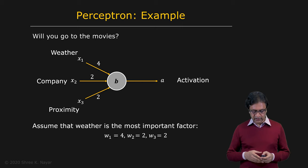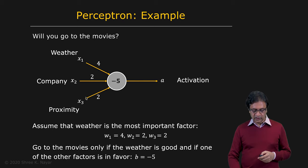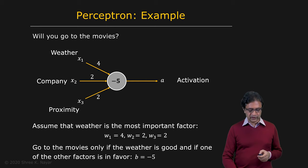We need a little bit more information to decide what the weights and biases need to be in this case. Let's assume for a moment that the weather is the most important factor. That is, if the weather is bad, you're not going to the movies. So you can assign a relatively large weight for the weather and lower weights for the other two, company and proximity. So four to two, for instance. And let's say that what you would like is to end up going to the movies only if the weather is good and at least one of the other two factors is also true or in favor. So for that, you can set a bias of minus five right here.